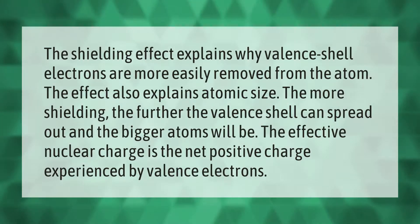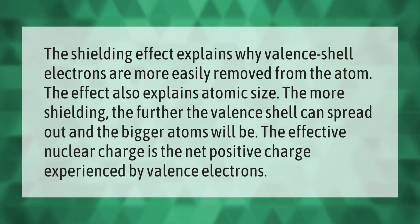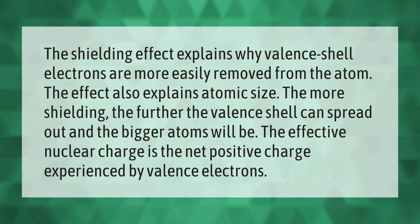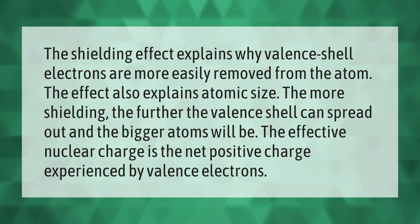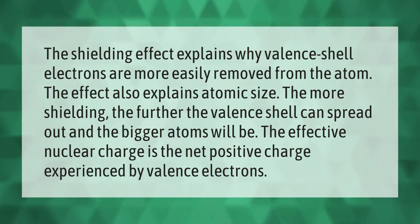The shielding effect explains why valence shell electrons are more easily removed from the atom. It also explains atomic size — the more shielding, the further the valence shell can spread out and the bigger atoms will be. The effective nuclear charge is the net positive charge experienced by valence electrons.